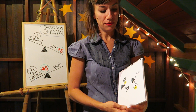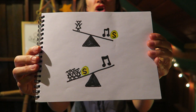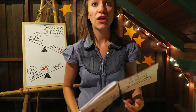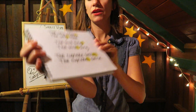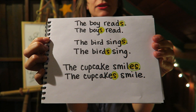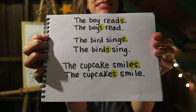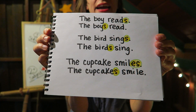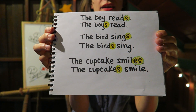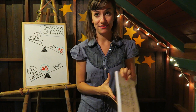For example: 'The girl sings, the girls sing.' Here are more examples — follow the S: 'The boy reads, the boys read. The bird sings, the birds sing. The cupcake smiles, the cupcakes smile.' The S goes back and forth — easy to remember!